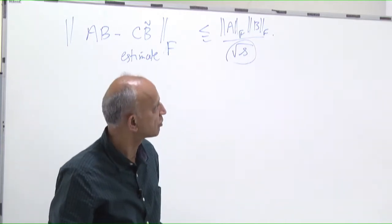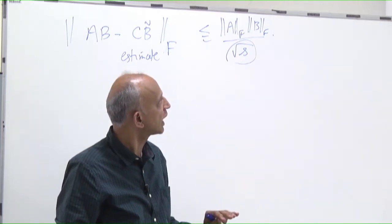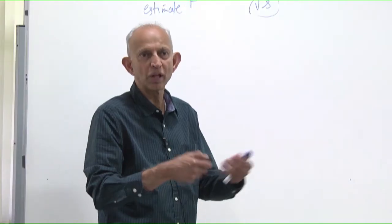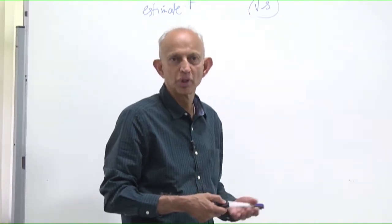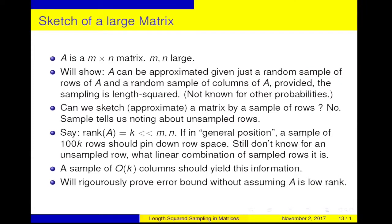That we will use when we do the compressed representation. So this was just recap. This is what we are doing now: A is an M by N matrix, potentially big in both dimensions M and N. We'll show, without assumptions on A, that A can be approximated, provided you give me just a sample of rows of A and a sample of columns of A. But the sampling has to be length squared to get reasonable error bounds. If the sampling is done with arbitrary probabilities, then we don't know good error bounds.